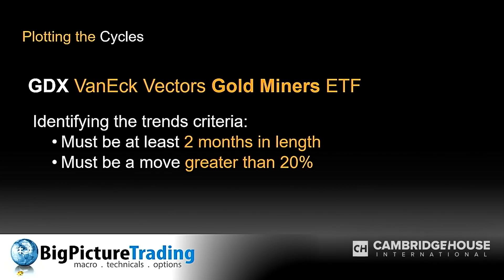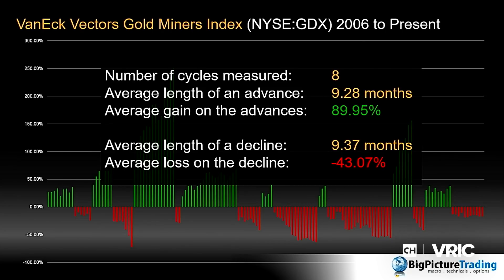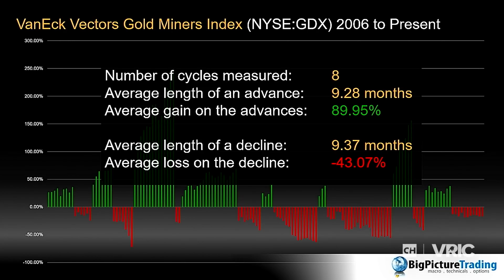So I ask the question: how long do you think the average gold miner cycle based on that criteria is? When we look at GDX going back to 2006, there were eight cycles — eight declines and eight rises. The average length of one of the rises was about 9.28 months, which was about a 90 percent rise in the GDX. At the same time, the average decline lasted very close to nine months as well, and the average decline was near 40 percent. That's pretty volatile.